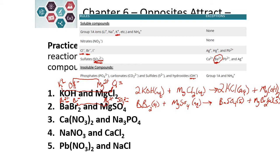Now we balance our chemical reaction. We have one barium on each side, two bromides on each side, one magnesium on each side, and one sulfate on each side. Our reaction is already balanced.